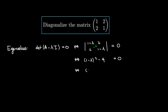From (1 - lambda)² - 4 = 0, we get 1 - lambda equals plus or minus the square root of 4, which is 2. This tells us exactly what lambda is: we can have lambda equal to negative 1 or lambda equal to 3.